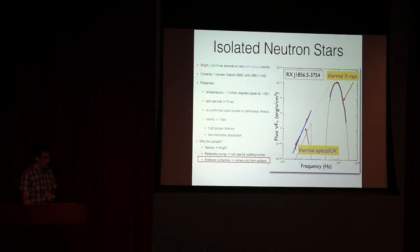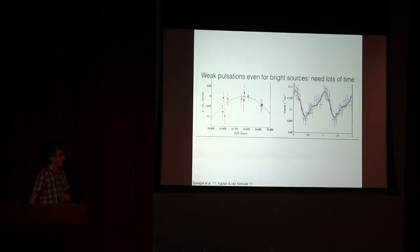We've been studying these for a couple of decades now. I said they have a spin period three to ten seconds. Unlike some sources I'm going to show you later, the pulsations from these sources are rather sinusoidal and gentle with low amplitudes, as low as one percent or even lower in some cases, which makes doing timing observations very challenging.